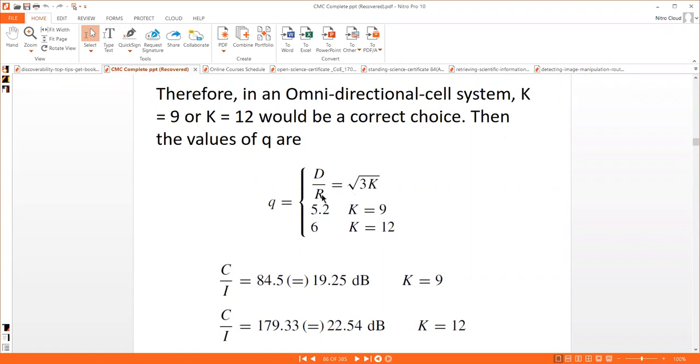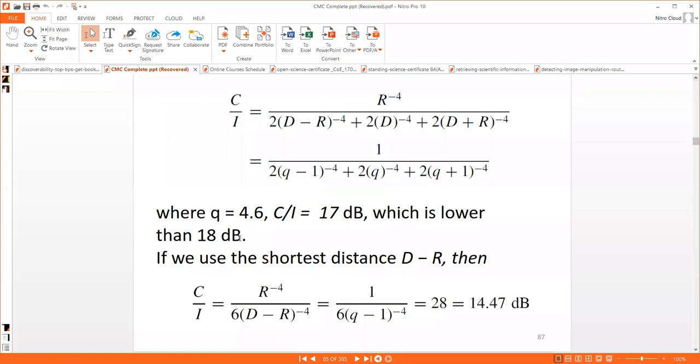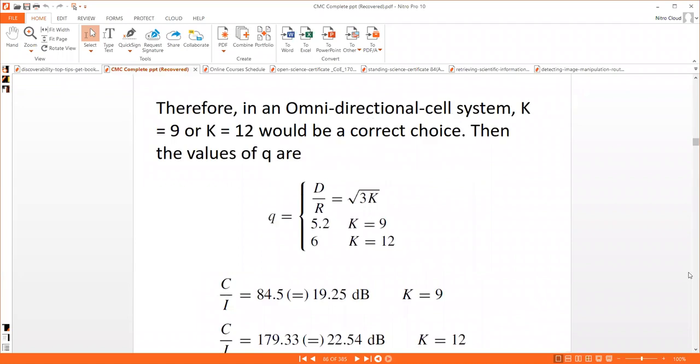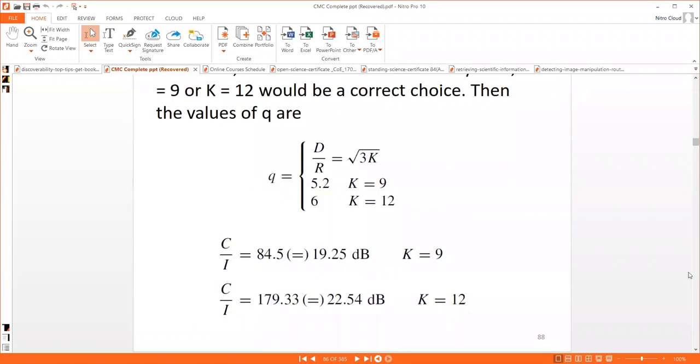The values of q/r are: 5.2 for K equals 9, and 6 for K equals 12. Using the formula, C/I equals 19.25 decibels for K equals 9, and C/I equals 22.54 decibels for K equals 12. As per our theoretical aspect, the value must be equal to or greater than 18 decibels to achieve good wireless communication.